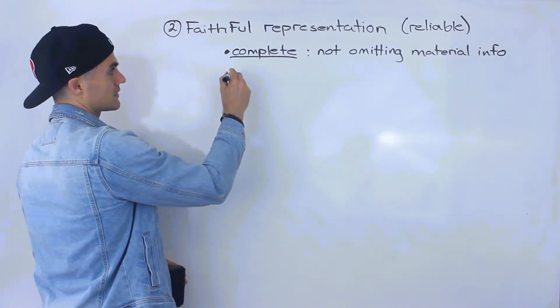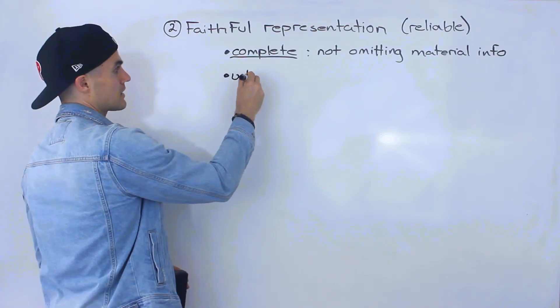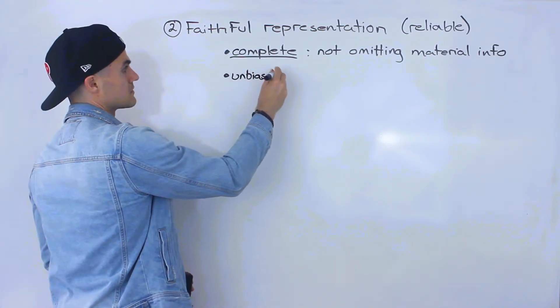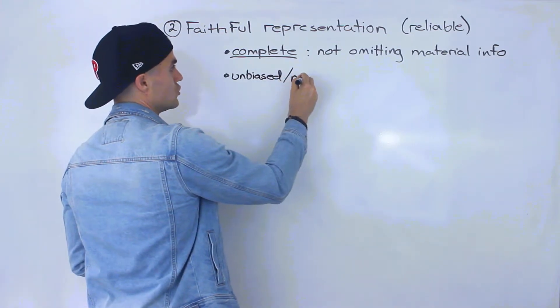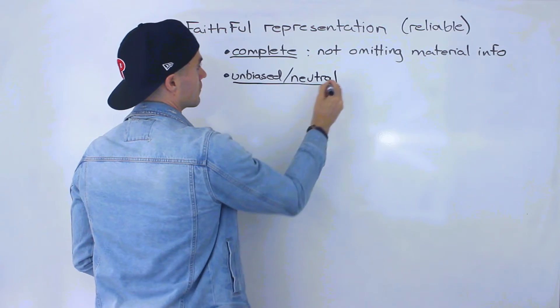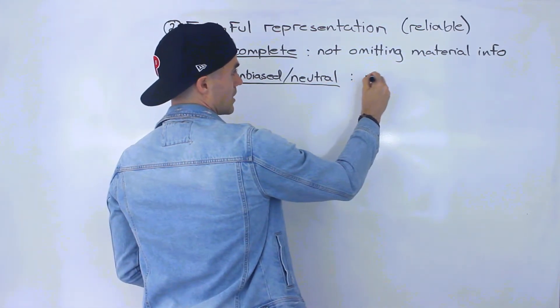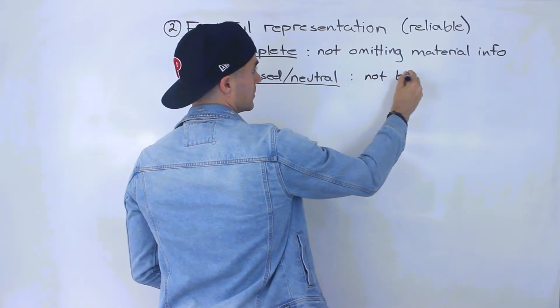Second characteristic of faithful representation is that the information is unbiased. Another term for that is neutral. Basically what this means is that the information is not biased.